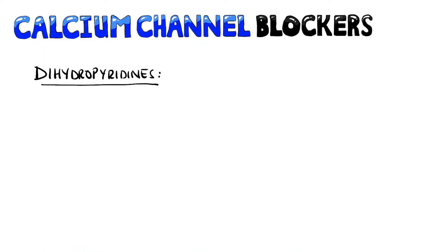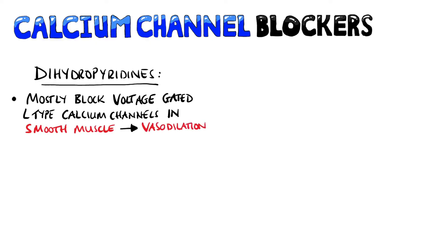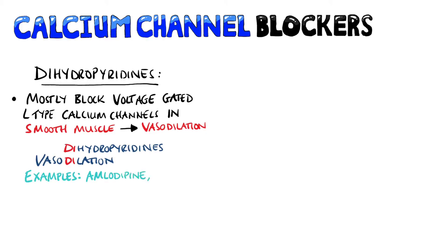Not all calcium channel blockers act equally on all tissues. Dihydropyridines block voltage-gated L-type calcium channels mostly in smooth muscle, so you get much more of a vasodilation effect with dihydropyridines. A useful mnemonic: dihydropyridines cause dilation. Examples include amlodipine, nifedipine, and nicardipine.